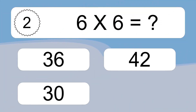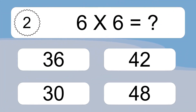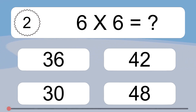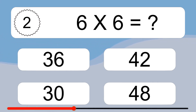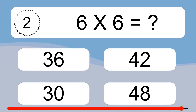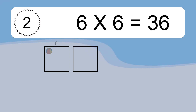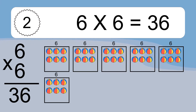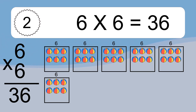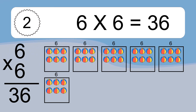6 times 6 equals what? 6 times 6 equals 36. We have 6 boxes, and each box has 6 colorful balls inside. If you count all the balls in all the boxes together, you will have 6 times 6 balls. This equals 36 balls.